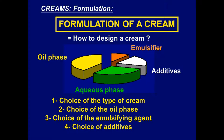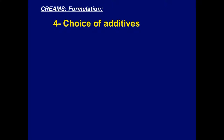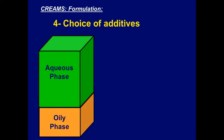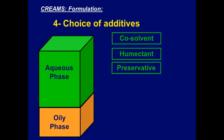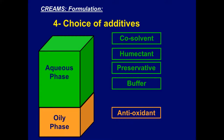Now we know how to choose the emulsifying agent. We have only one step left to design our cream: how to choose the additives. Additives used in creams act either in the aqueous phase or in the oil phase. Additives acting in the aqueous phase are: co-solvent, humectants, preservatives, and buffers. The additive acting in the oil phase is the antioxidant.